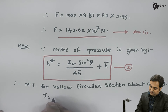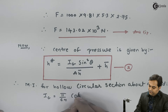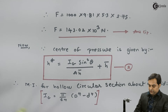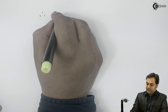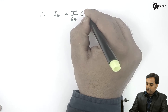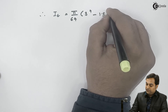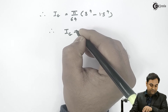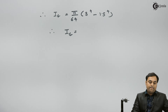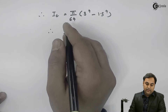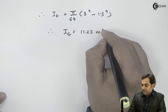The moment of inertia IG for a hollow circular section about the centroid is given by: IG equals pi by 64 times (outer diameter raised to 4 minus inner diameter raised to 4). Substituting the values, IG equals pi by 64 times (3 raised to 4 minus 1.5 raised to 4). This gives IG equals 11.25 meter raised to the power 4.